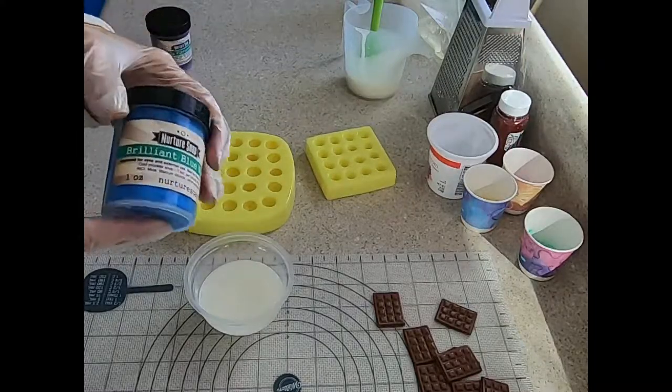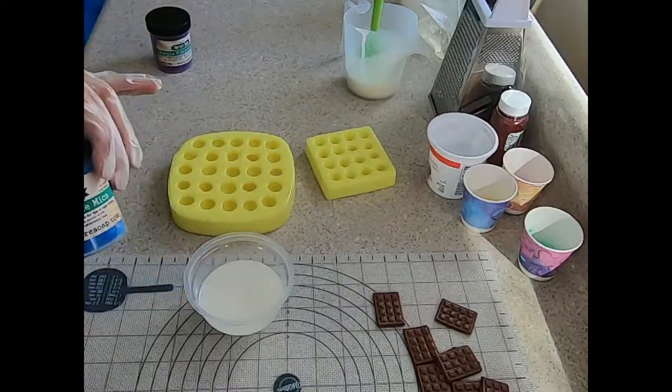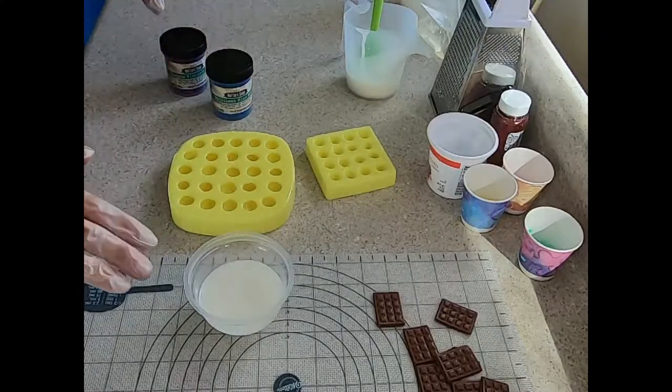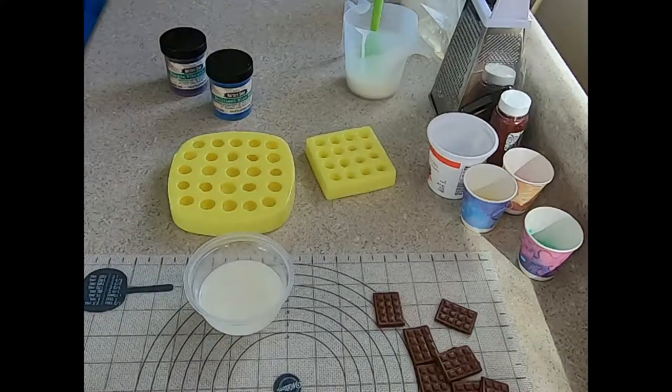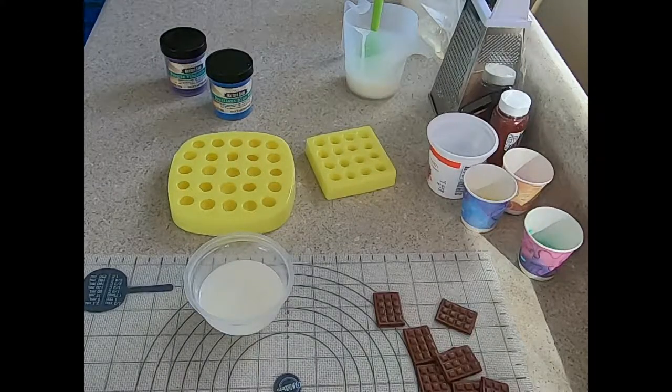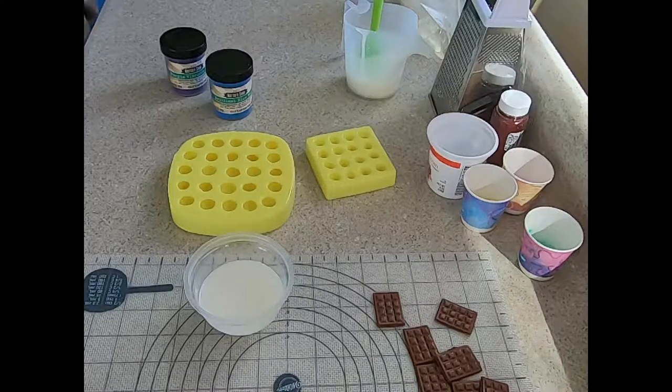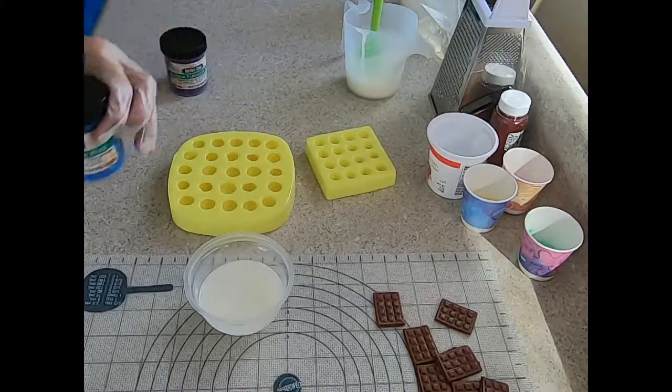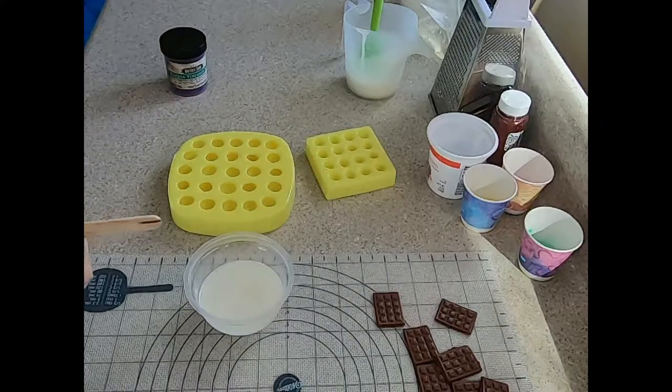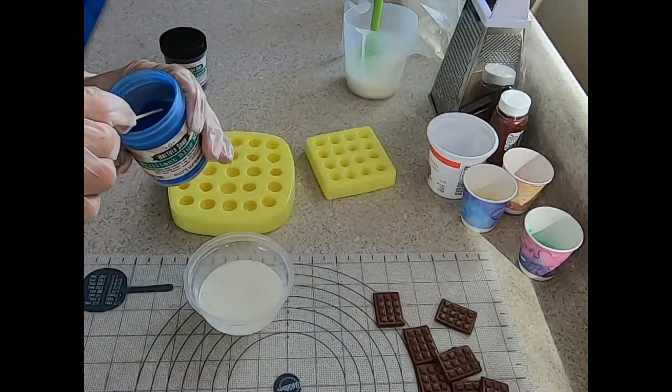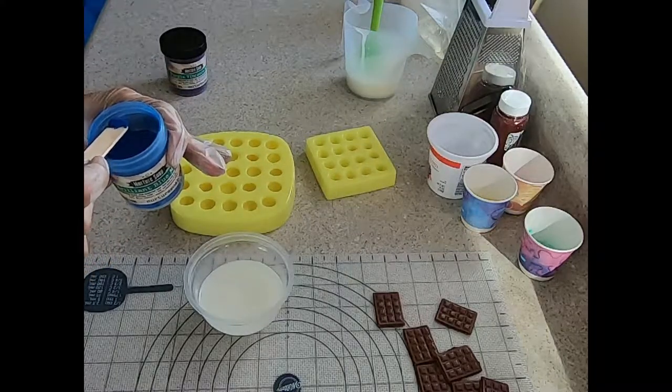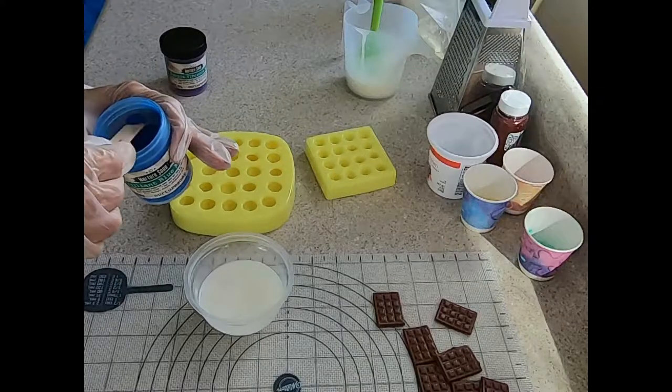And for my blueberries, I'm going to use brilliant blue mica from Nurture and I'm going to use a little bit of purple vibrance. So I'm going to grab myself a bigger popsicle stick. And what I'm going to do is I'm going to put it in there dry. This is more the way I do things is an advanced technique. I've been doing this for a very long time. I will make a beginner's series of melt and pour.